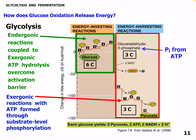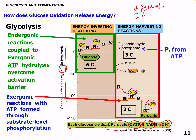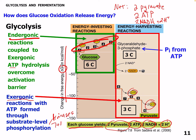Glycolysis reactions are coupled to exergonic ATP hydrolysis to overcome the activation barrier. Here we can see change in free energy — we slowly build up investing in ATP, then we get to that activation barrier, and we drop down and now we're getting energy, becoming much more exergonic. Each glucose yields 2 pyruvates, 2 ATP net gain, 2 NADH, and 2 hydrogen ions. Steps 1 to 5 are endergonic, and steps 6 to 10 are exergonic reactions with ATP formed through substrate-level phosphorylation using kinases at steps 7 and 10.